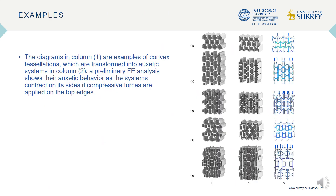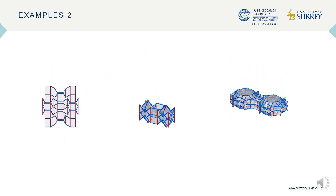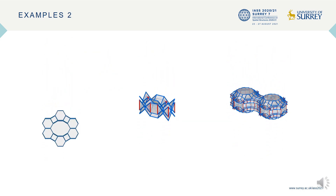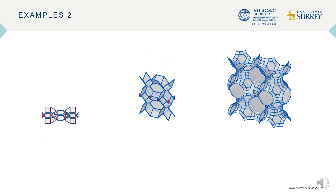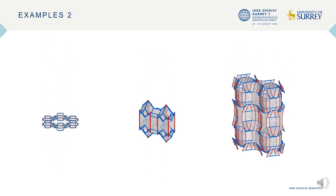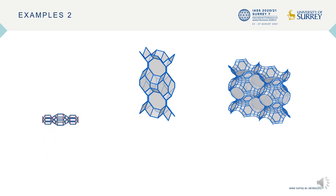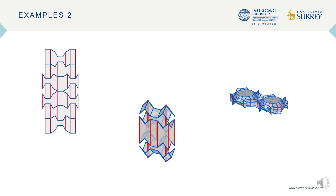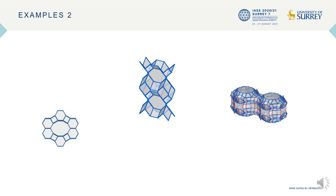With this methodology, we created a number of examples. The diagrams in column 1 are examples of convex tessellations which are transformed into auxetic systems in column 2, and the preliminary FE analysis shows their auxetic behavior. In the last slide, I show some animations to visualize the content of the presentation. In the first example, we turn a convex tessellation of hexagons, octagons, rhomboids, and dodecagons into an auxetic system with our methodology.